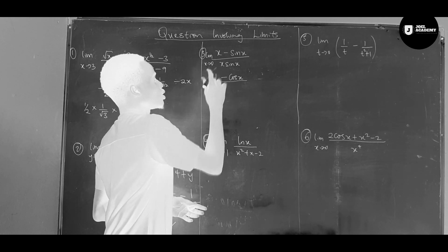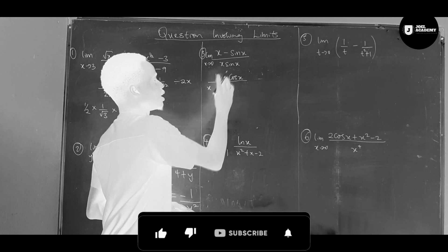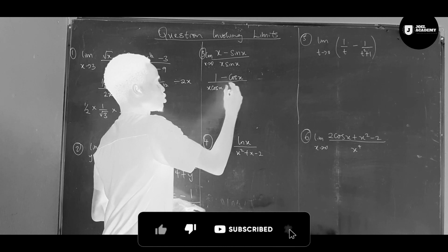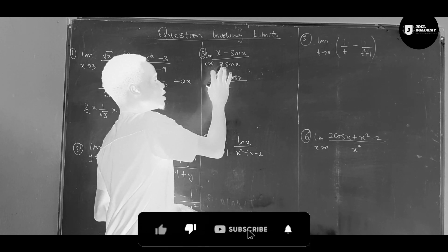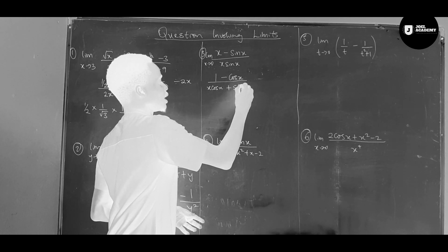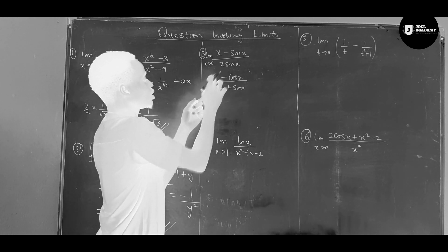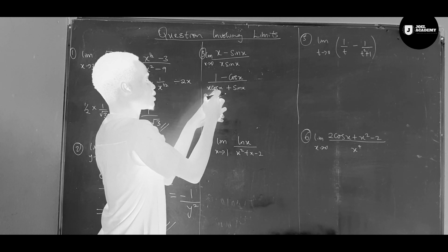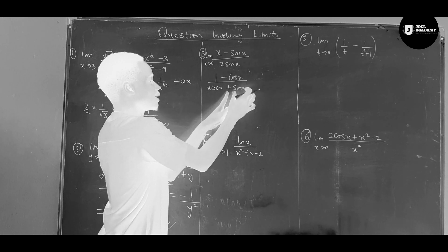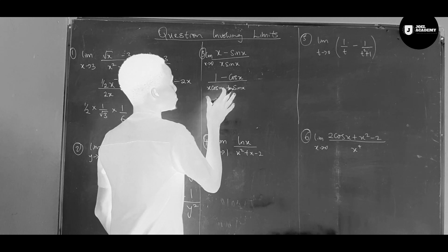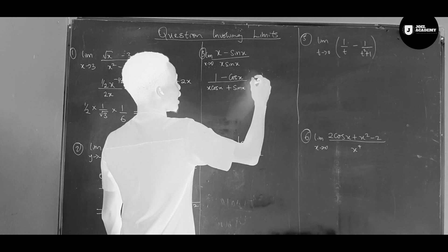The shortcut with the product rule is: keep this term constant and differentiate the other. So let's keep x constant and differentiate sin x, which gives cos x. Then we kept sin x constant and differentiate x, giving us plus one. So the denominator becomes x cos x plus sin x.